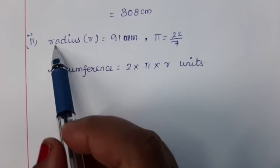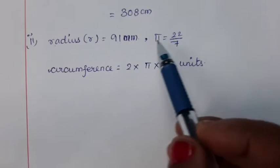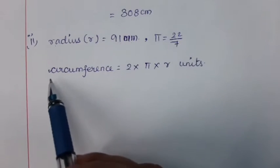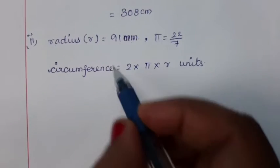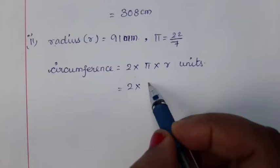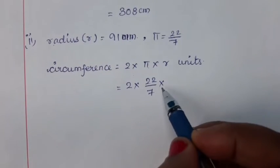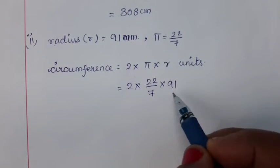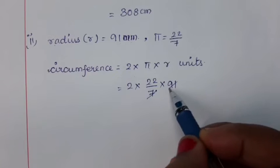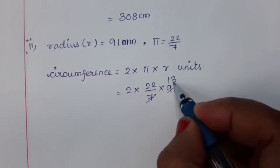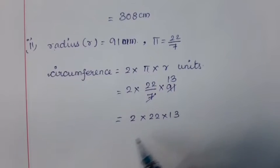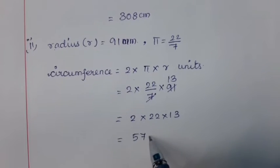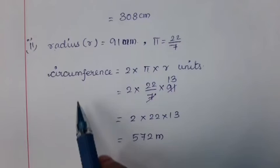Subdivision 2: The given radius r is equal to 91 millimeters and the value of pi is equal to 22/7. The circumference of the circle is equal to 2πr units. Using the given values we get 2 into 22/7 into 91. By simplifying 91 by 7 we get 13. So we get 2 into 22 into 13. By multiplying all these numbers we get 572 millimeters, which is the required circumference of the circle.